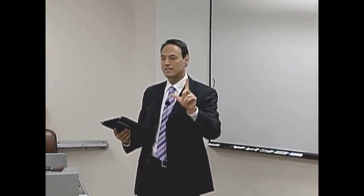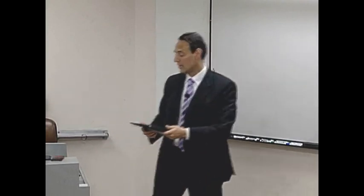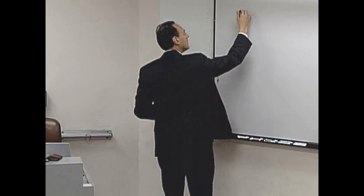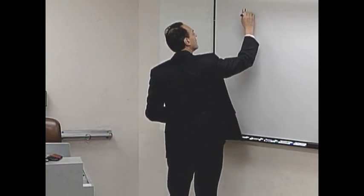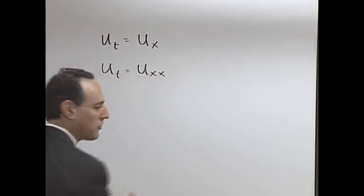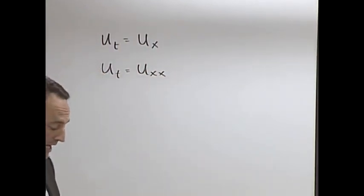And basically I want to show you what it means to violate a CFL condition. So we're going to take some of these methods we've been talking about, program them, and then actually take a look at the dynamics, violate CFL, see what happens when you have an unstable scheme. We're going to look at two equations in particular: UT equals UX and UT equals UXX. Those are the two prototypical equations we've been looking at.